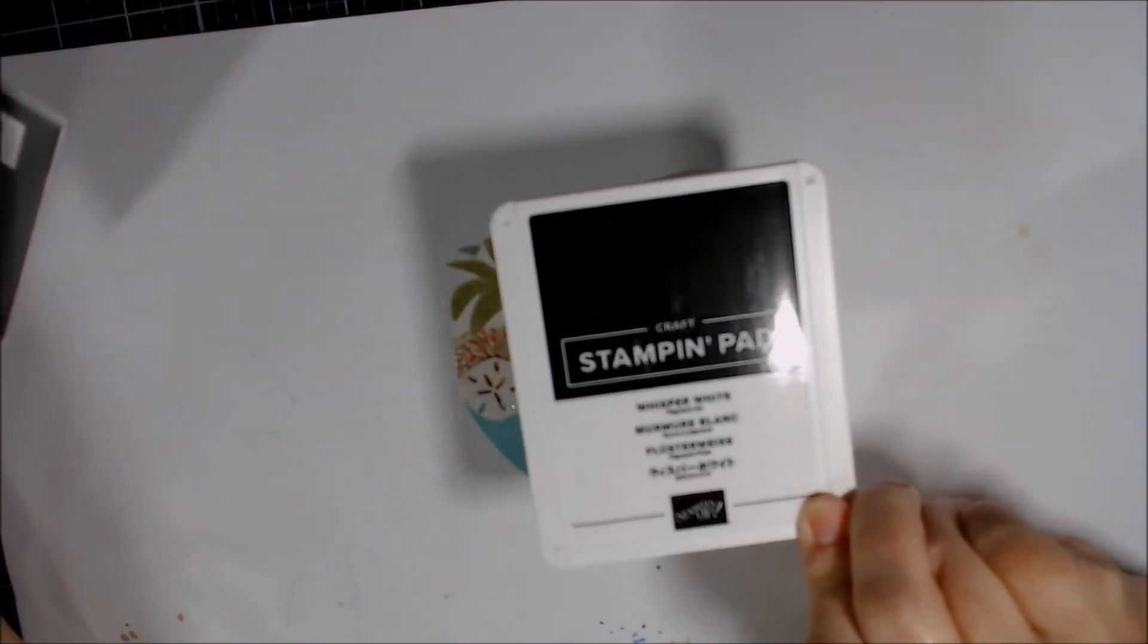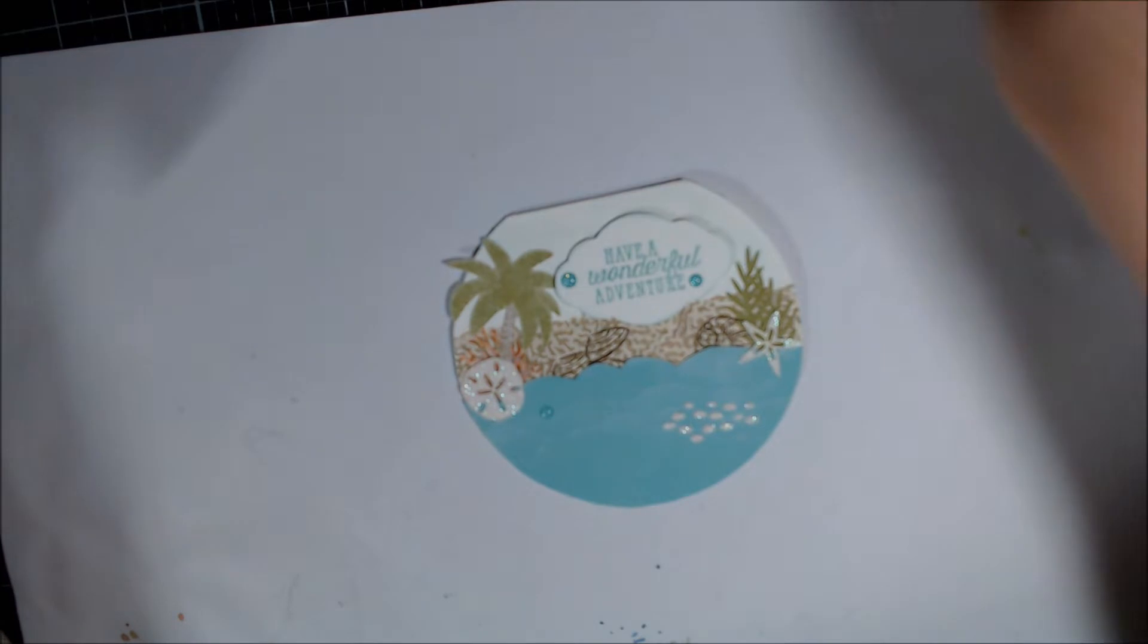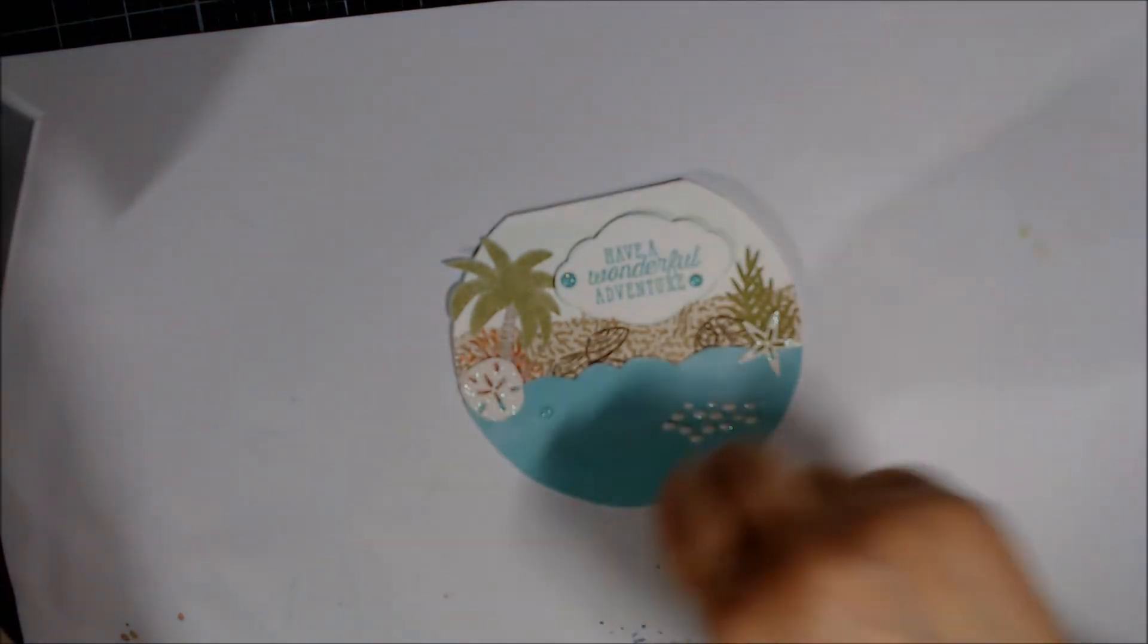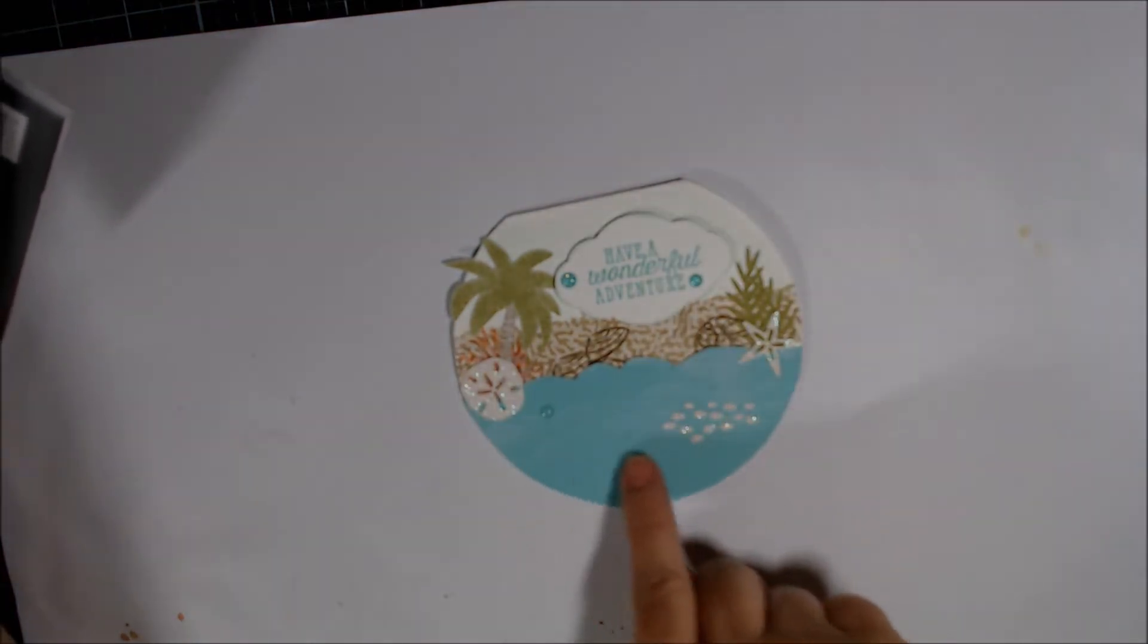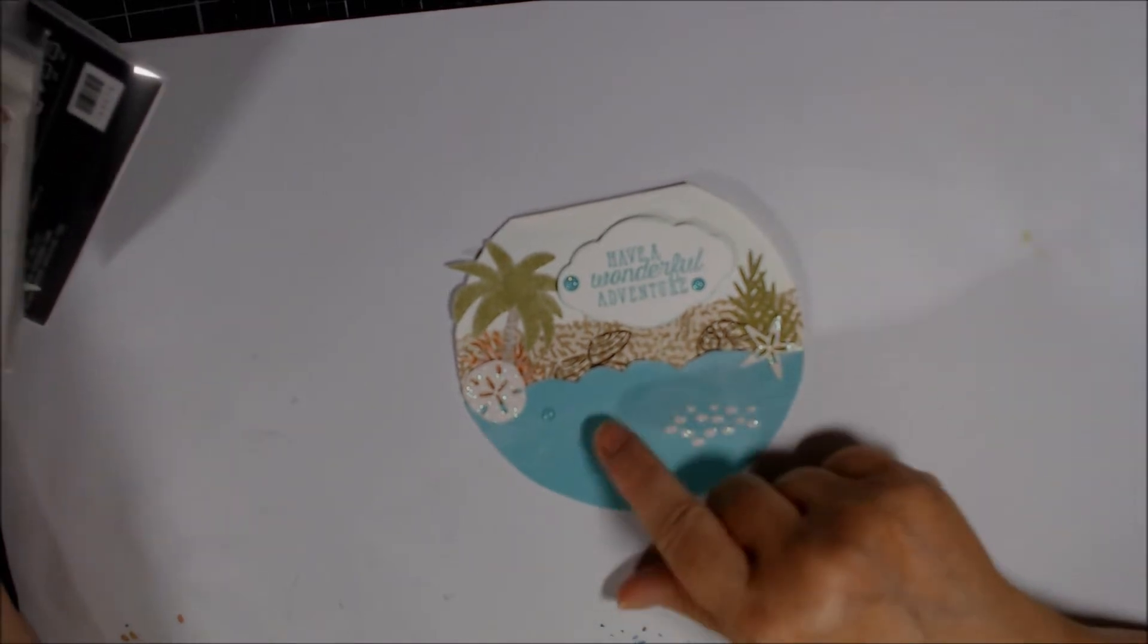But to soften it a little bit, I went over it with the Whisper White, forgive my voice guys, craft stampin' pad with a blender brush thing. And I just gently went over it to make it look like the white caps on the waves kind of thing.